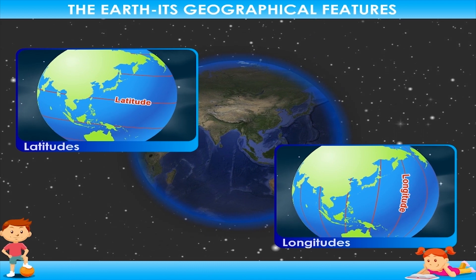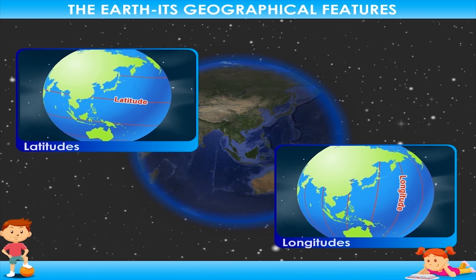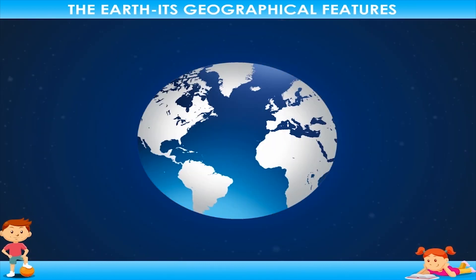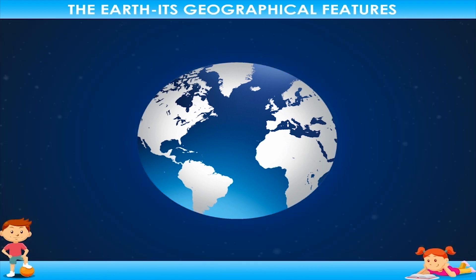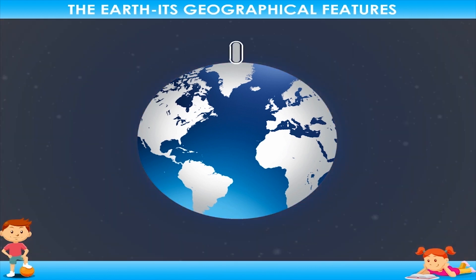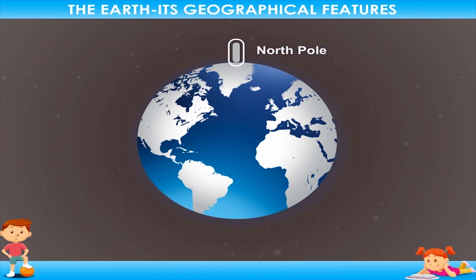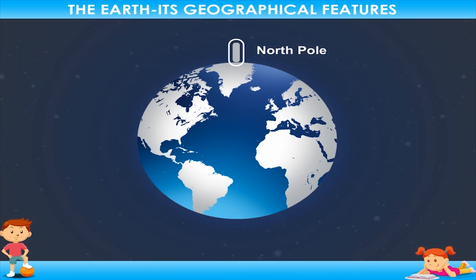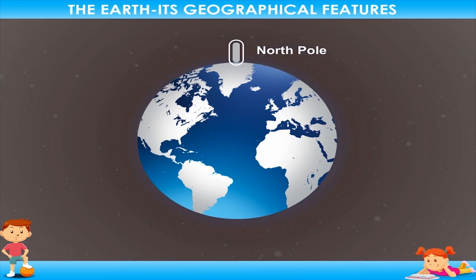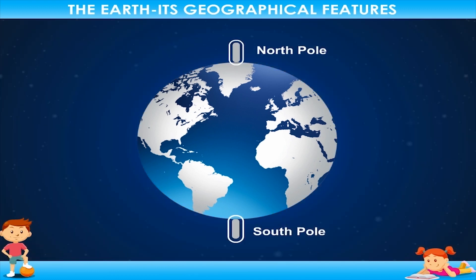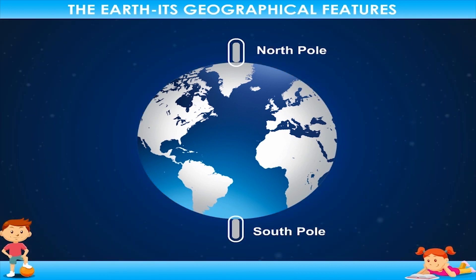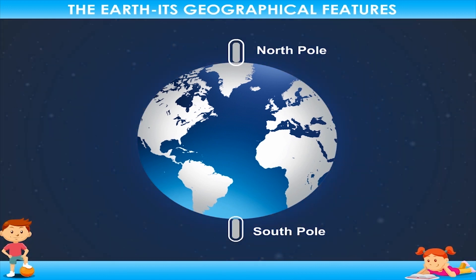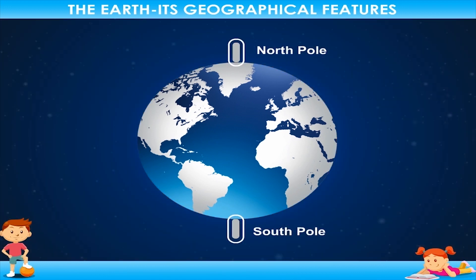These lines help us to locate a place on the Earth. The point on the north where these lines join is called the North Pole, and the point on the south is called the South Pole. Let us learn in detail about the importance of these lines.